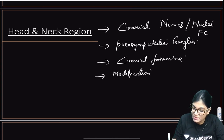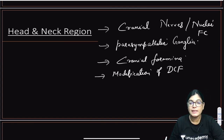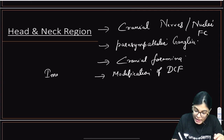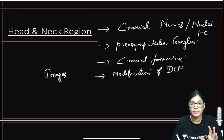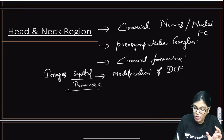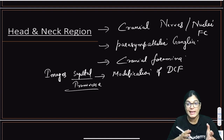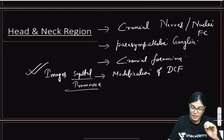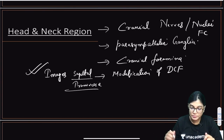Another important topic is modifications of the deep cervical fascia — the investing layer, pre-tracheal layer, and pre-vertebral layer. You must identify the tracheoesophageal groove and nerve groove in transverse and longitudinal sections. Two important images to practice: the sagittal section and the transverse section. Know the difference between the danger space and retropharyngeal space, where the alar fascia is, where the buccopharyngeal fascia is located, and the extent of pre-tracheal and pre-vertebral fascia.